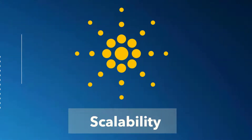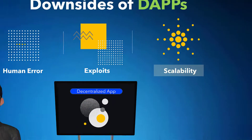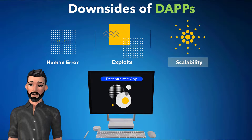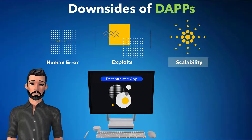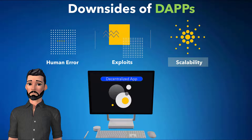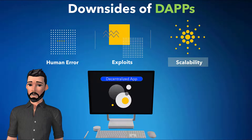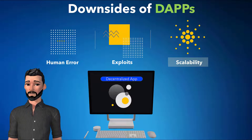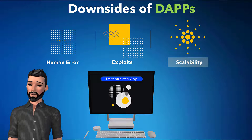In most cases, the bandwidth of a DAP is limited to the blockchain it resides on. For example, if a blockchain can only process 10 transactions per second, the decentralized application would have to cope with that limitation. When one dApp uses too many computational resources, the entire network gets backed up.